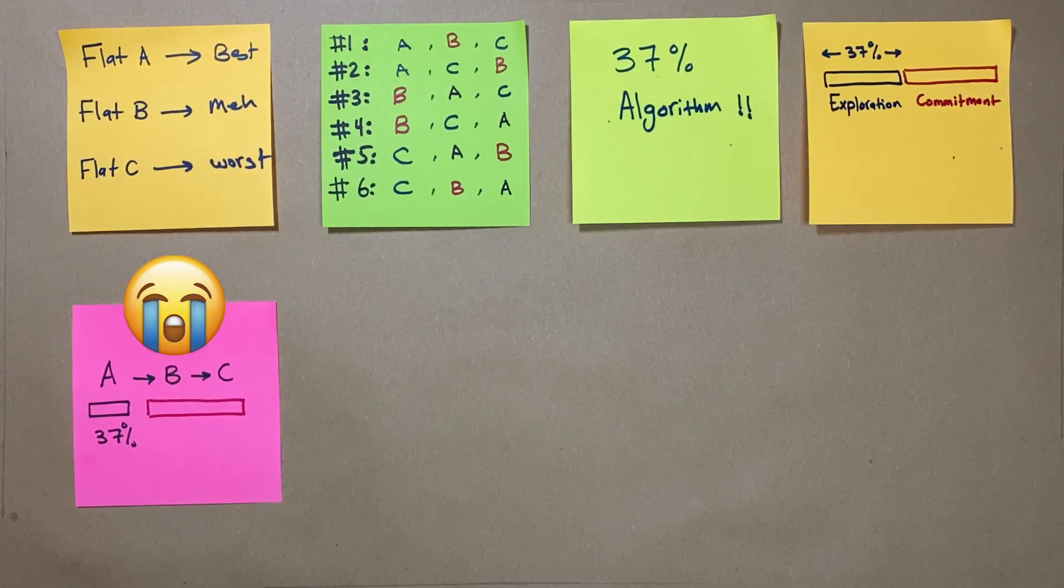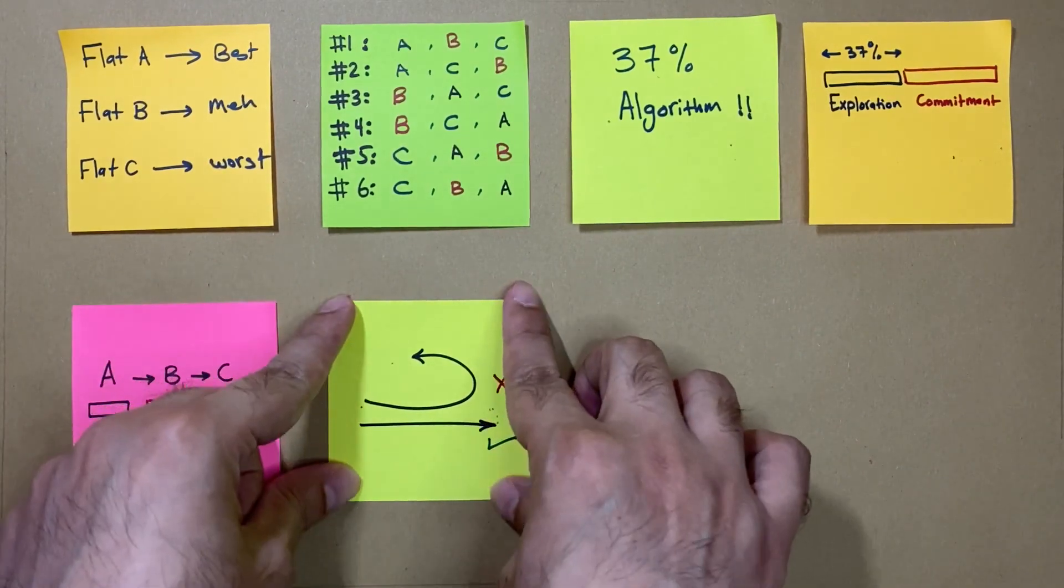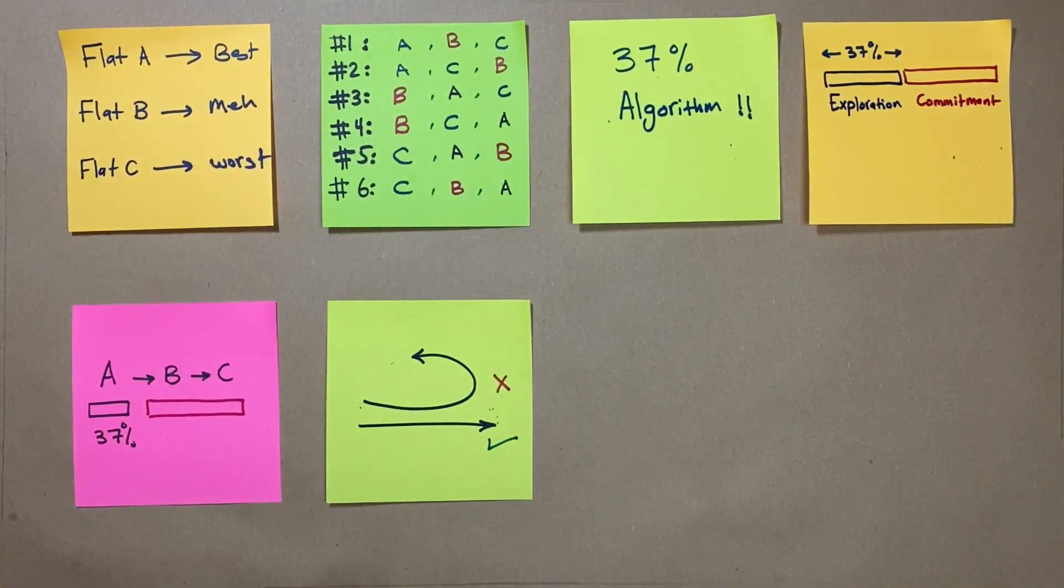For Ted, big fail. Note that he can't go back to flat A or B, as other people in the queue might have already taken it.